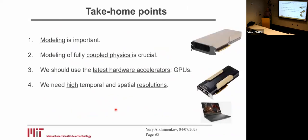There are a few take-home points. Modeling of full physics is important — coupled physical processes. It's also important to use the latest hardware accelerators to reach a solution in seconds. We also need high temporal and spatial resolution to resolve the physics — because if our resolution is not sufficient, we can miss important events.